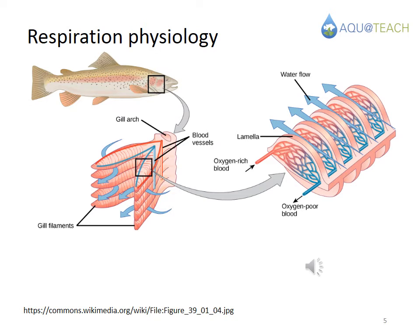In section 8.3 we provide more details about the respiration physiology of fish, simply because this is a critical point in aquaponic systems. One of the most important ways to keep your fish alive is to make sure they get enough oxygen. The main reason for this is that oxygen levels in water are much lower than in air, and fish must work a lot harder to absorb it via their gills.